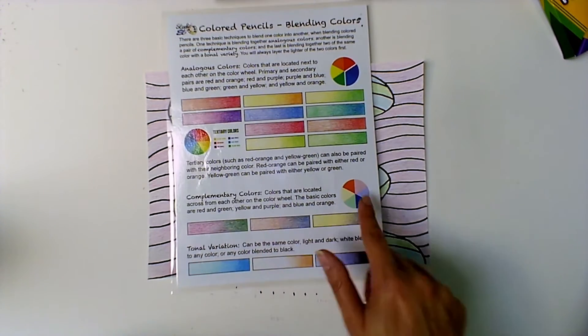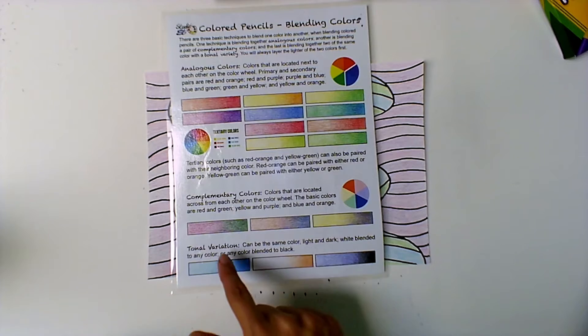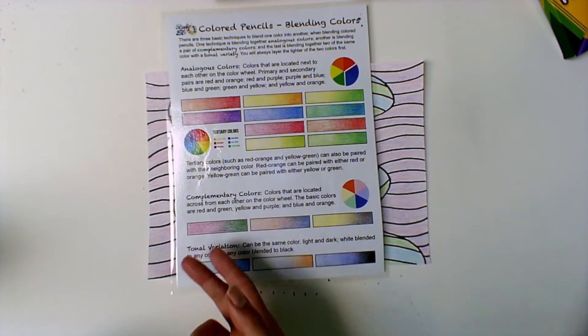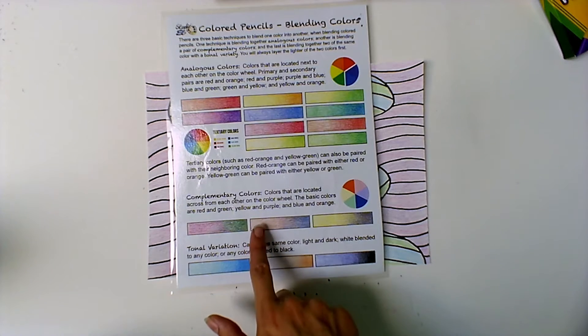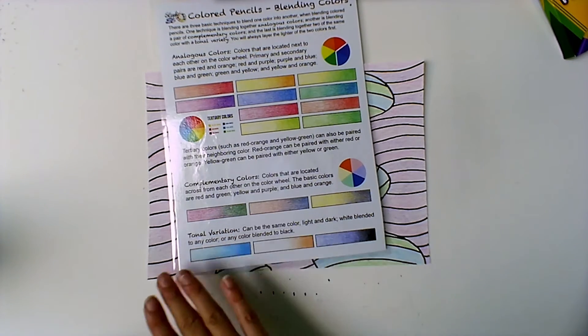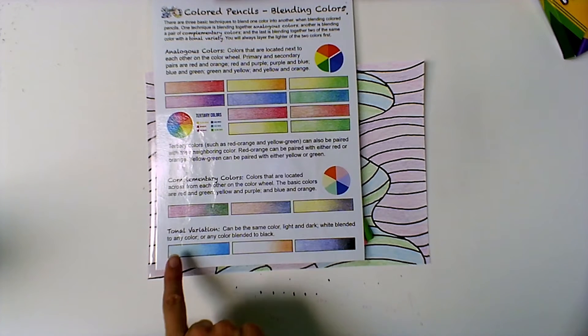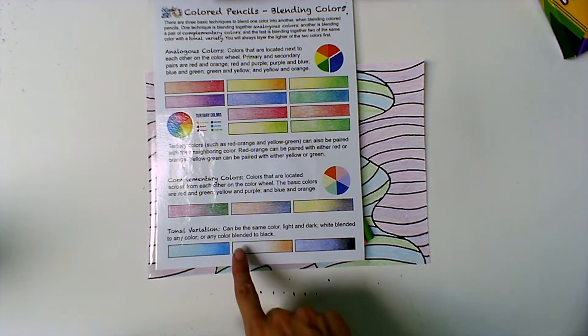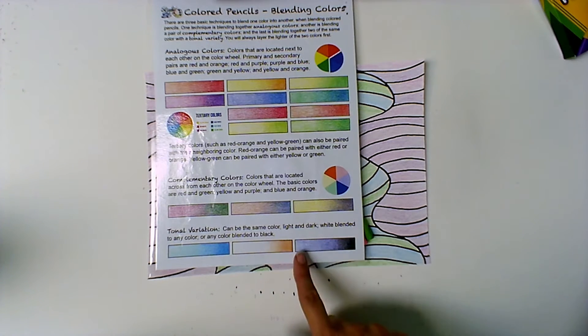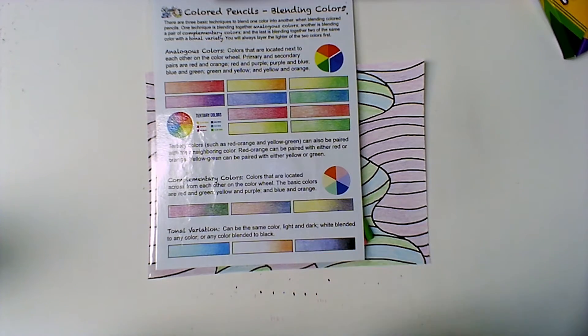You could do complementary colors which are the ones across from each other on the color wheel. So this is red going into green or you could flip-flop that green going into red, blue and orange, yellow and purple. You could also just do the lighter or darker version. So you could do light blue into a darker blue. If you were to have left a section white which is an option you could have gone white into any color you wanted and then any color into black.